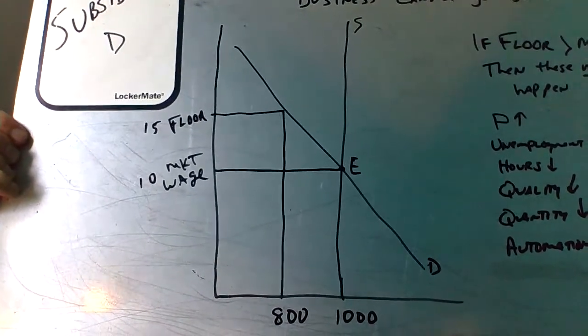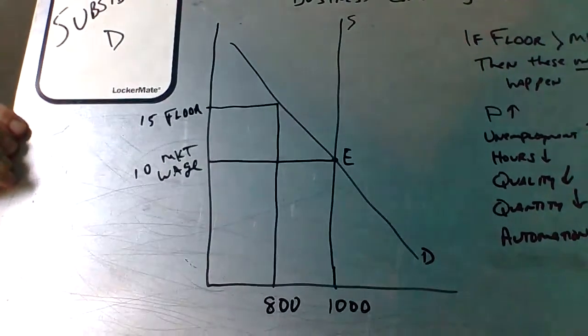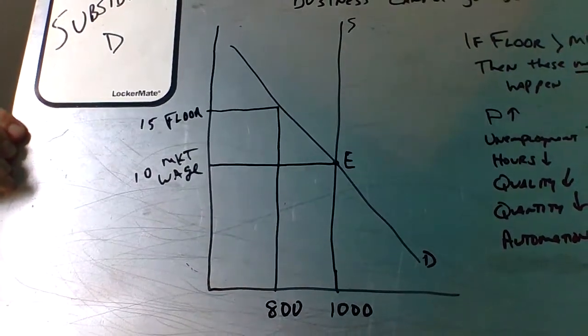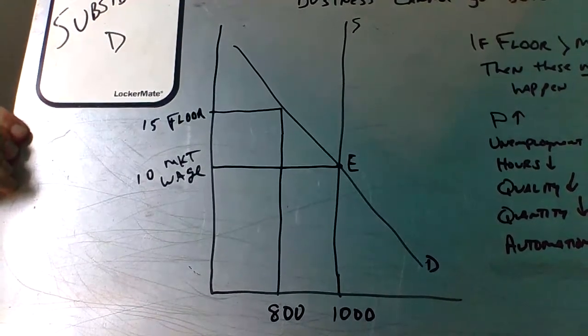The demand curve, which is a normal downward curve, is the demand for those workers. Fast food, retail stores, normally we're in weird times, but normally there's a demand for you. And then E, where it crosses, is what we're going to call the market wage, is what you tend to get paid.